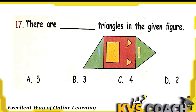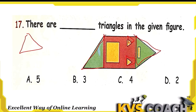The next question: how many triangles are there in the given figure? A triangle is a 3-sided figure. Counting: 1, 2, 3, and 4. So there are only 4 triangles. Option C is the right answer.